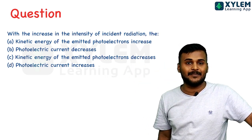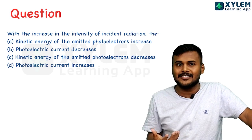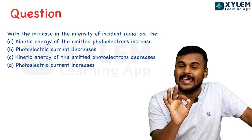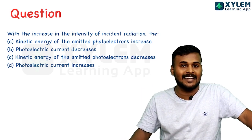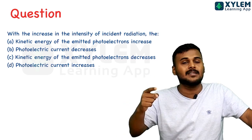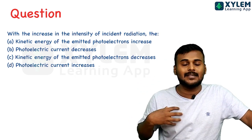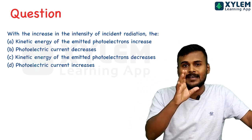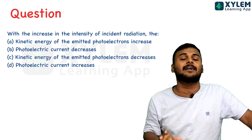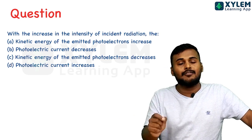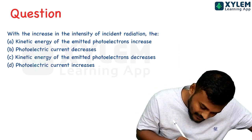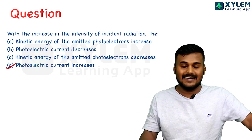When you increase the intensity of incident light, the number of photoelectrons emitted will increase. As a result, the photoelectric current will increase. So option D is the right answer.